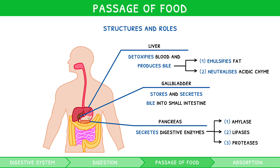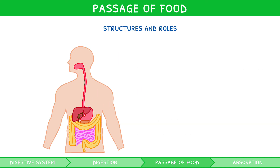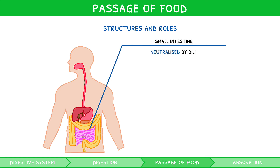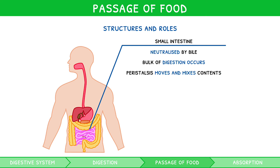Back to the passage of food. Chyme leaves the stomach and enters the small intestine, where it is neutralized by bile from the gallbladder. Then the bulk of digestion occurs thanks to amylase, lipases, and proteases secreted by the pancreas. Peristalsis moves the contents through the small intestine and helps to mix these enzymes thoroughly.